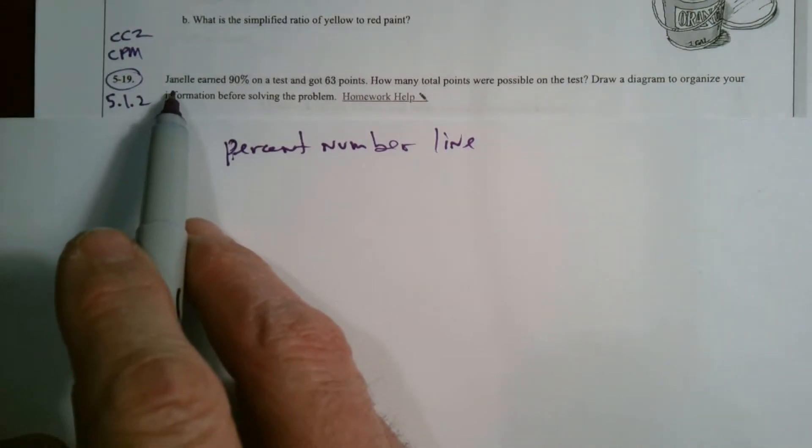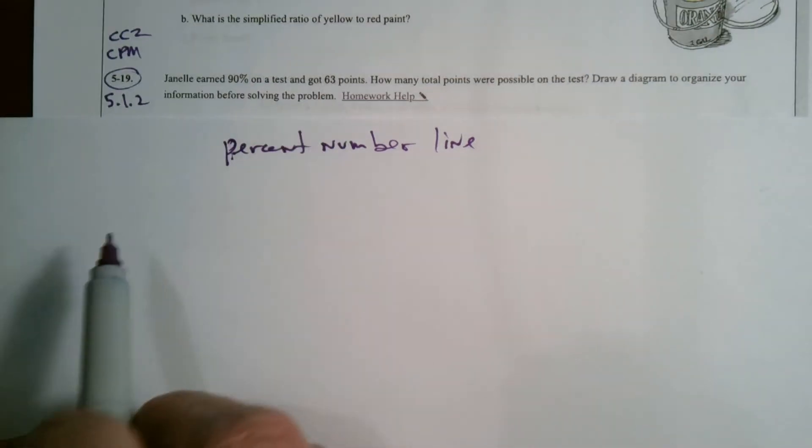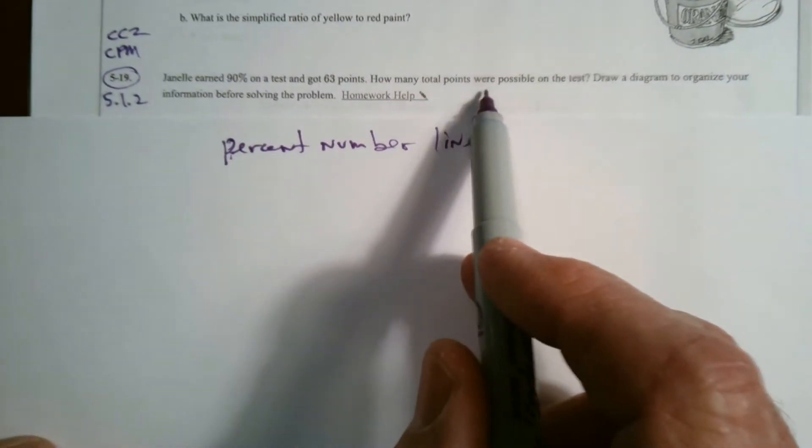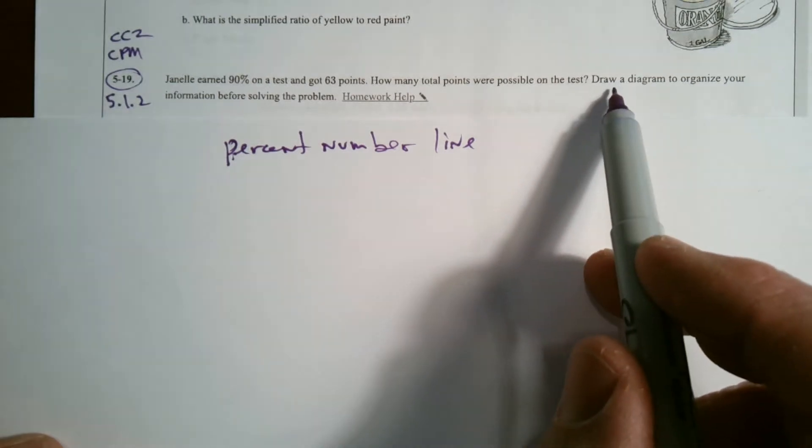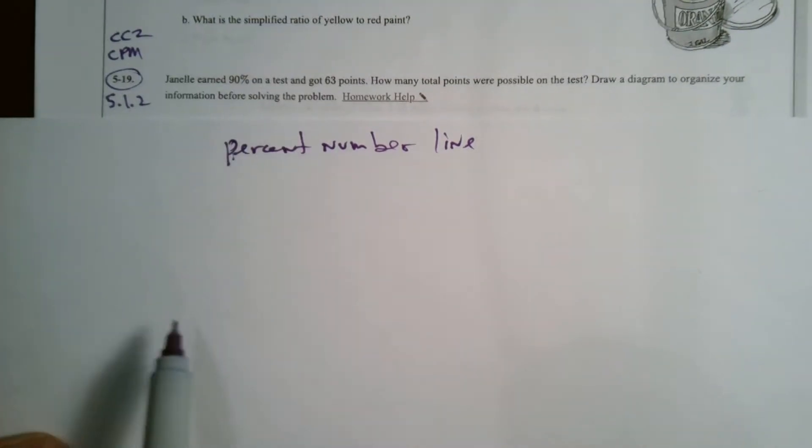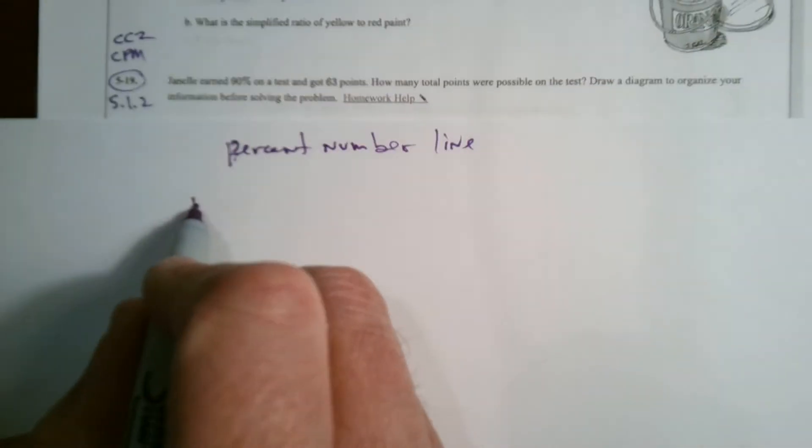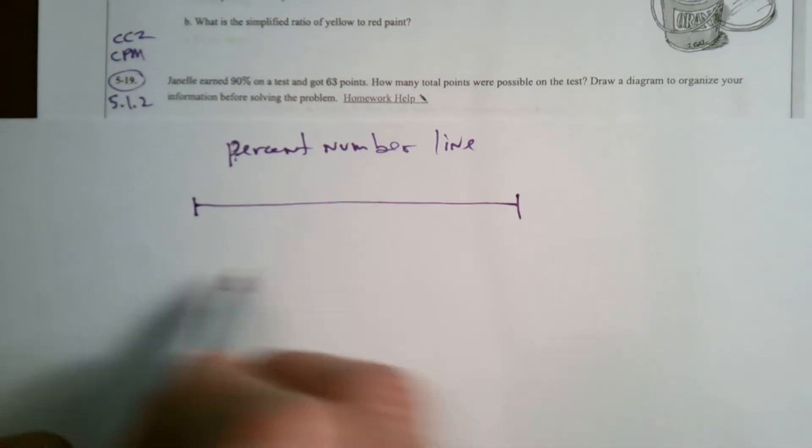So let's read the problem. Janelle earned 90% on a test and got 63 points. How many total points were possible on the test? Draw a diagram to organize your information before solving the problem. So a percent number line, I'm dealing with a percent problem. So that's why I want to use a percent number line as my diagram.